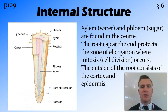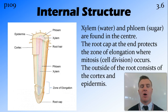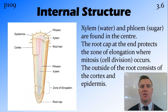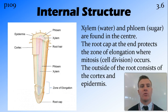Now let's look at the internal structure of the root. In the centre of the root, we have the xylem for transporting water and the phloem for transporting sugar. On the end of the root, we have the root cap, and its job is to protect the zone of elongation, which is just behind the root cap, where cell division and growth occurs in the root so that it can stretch out into other areas. Around the root to provide structure and protection is the cortex and the epidermis. Behind that zone of elongation is where you'll find the root hairs starting.